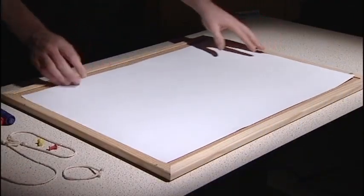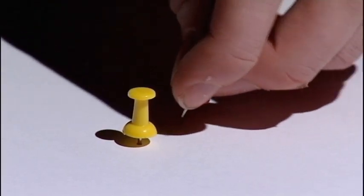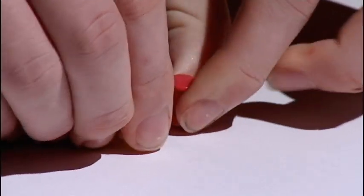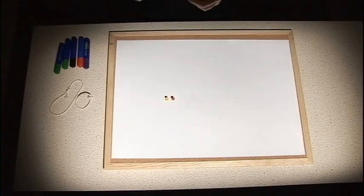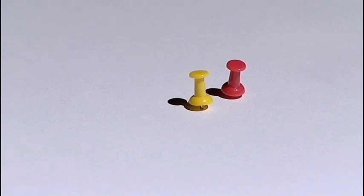To demonstrate ellipses, put a sheet of paper on a cork board and stick two pins close together near the centre of the paper. These two pins are the foci of the ellipse. In the solar system's case, one pin represents the Sun and the other is just an arbitrary empty point in space.